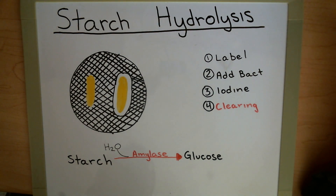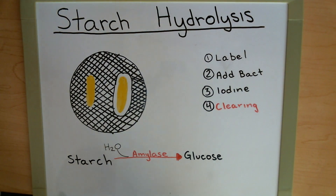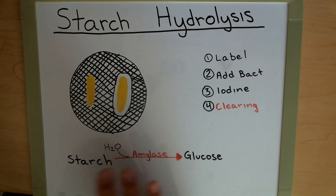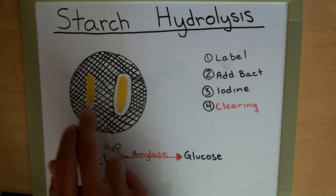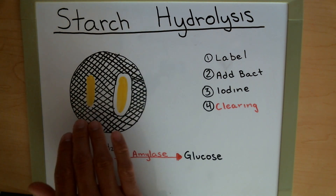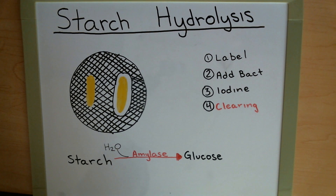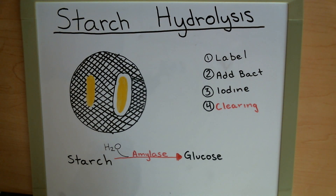After you've incubated and you have your bacterial growth, you're going to add iodine. The iodine is not going to color the bacteria — just the plate itself. You're going to swirl that around and observe either a clearing or no clearing around the bacteria. What this clearing means is that there's no more starch around that bacteria.